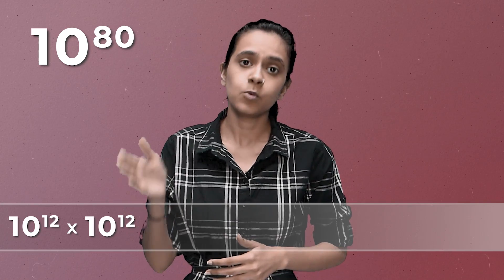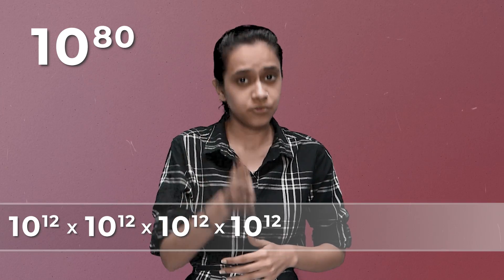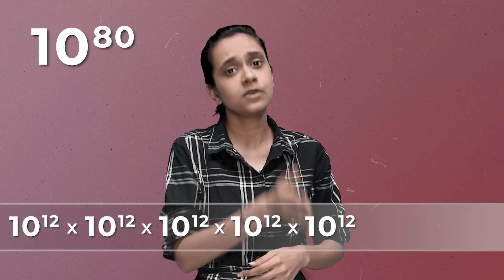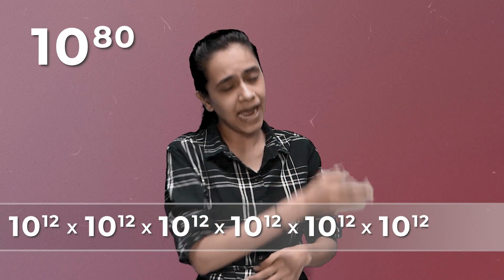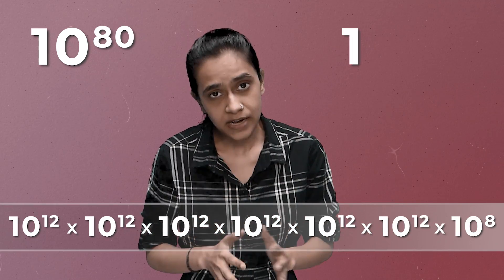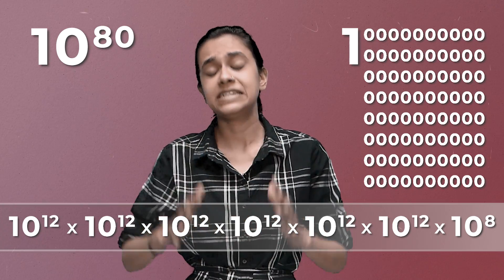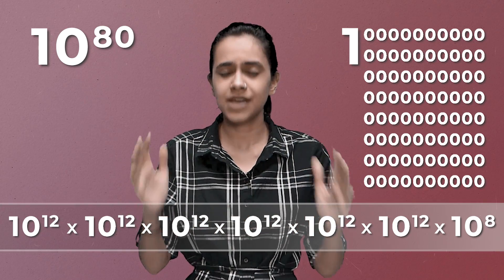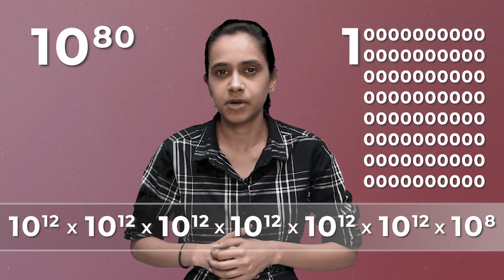Let's jump to 10 to the power 80. To arrive at this number, take a trillion, multiply it by a trillion, by a trillion, by a trillion, by a trillion, by a trillion, by a trillion, and then by a hundred million — that is 1 followed by 80 zeros. That's how big this number is.